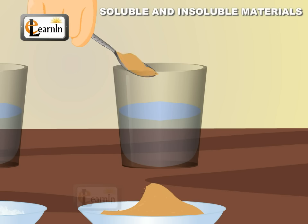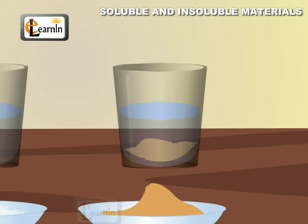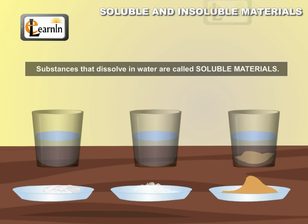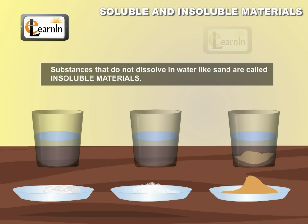Finally, add the sand sample to the glass of water. The sand will not dissolve in water and just settles at the bottom of the glass. Materials like salt and sugar are called soluble as they dissolve completely in water, whereas substances which do not dissolve in water, like sand, are called insoluble materials.